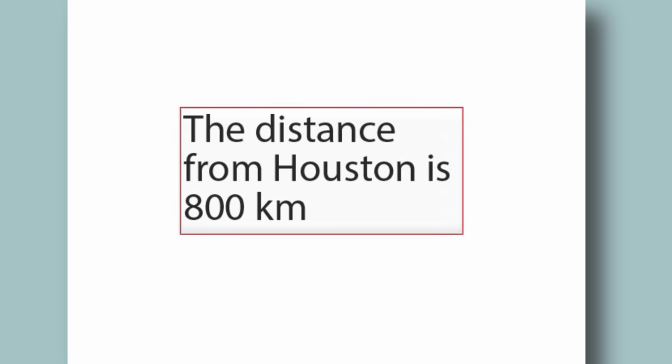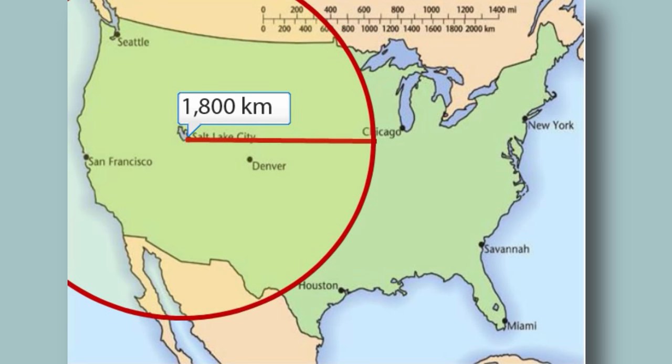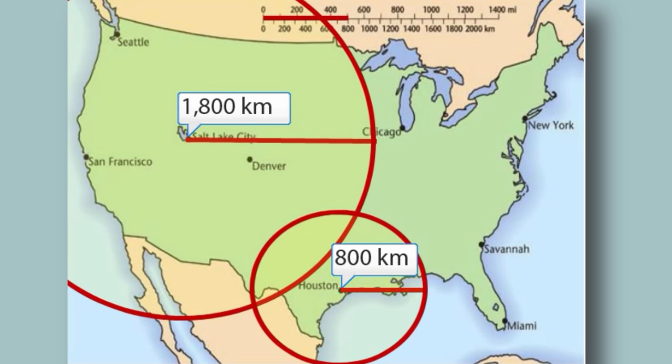Then we do the same for two more seismographic stations using the same method. We find the distance from Houston to be 800 kilometers, and for Savannah, 1,300 kilometers.